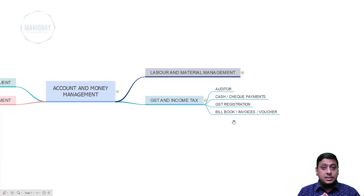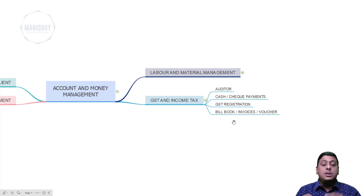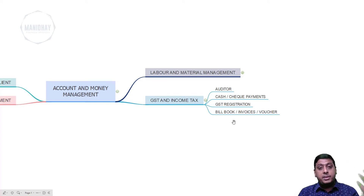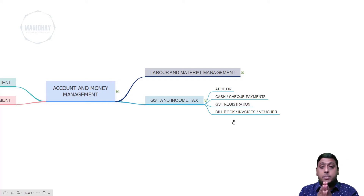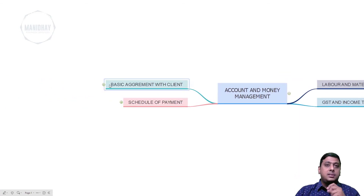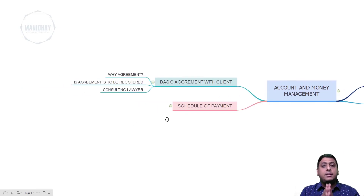GST registration is compulsory for everyone — go to your auditor, tell him you are starting this business, and he will guide you through the process. You should also properly maintain bill books, invoices, and vouchers — whatever you give to labor or material suppliers, and whatever invoices the material supplier gives you or you give to the client. Maintain a separate file for each project, otherwise it will be very difficult to manage.